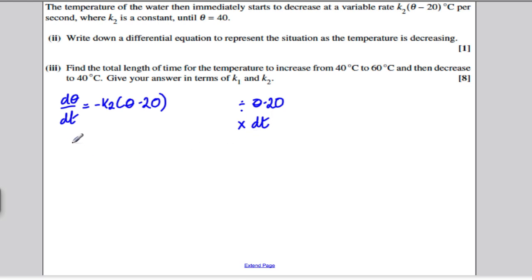Divide both sides by theta minus 20 and multiply both sides by dt. We'll get the following: 1 over theta minus 20, d theta would be equal to minus K2 dt and we take the integral of both. And this side would give us a ln, ln theta minus 20. And this side would give us minus K2t plus a constant.